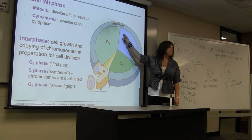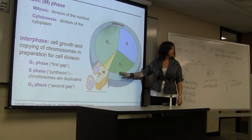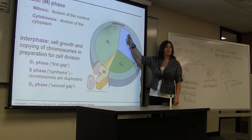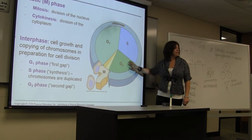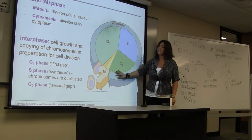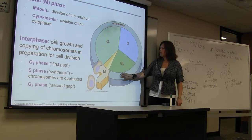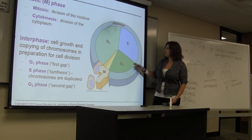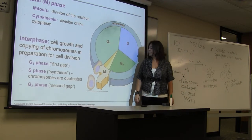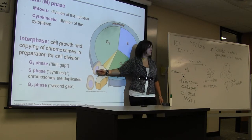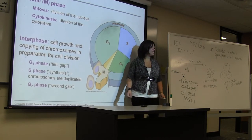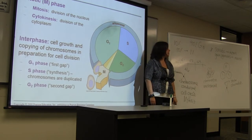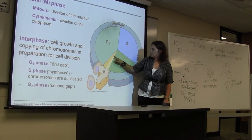After S phase, we have another growth phase — the G2 phase. In this phase, the cell is making sure that everything went smoothly in S phase, and it's also getting ready and preparing the cell for mitosis. Once the cell leaves G2 phase, it's going to enter into the M phase.